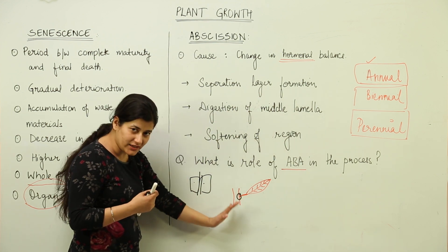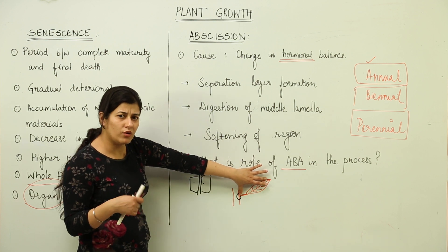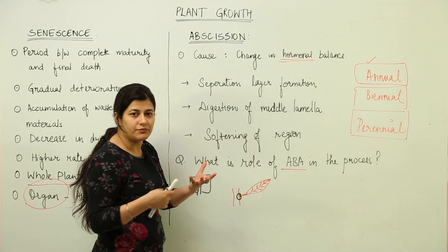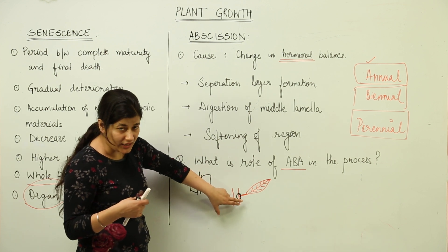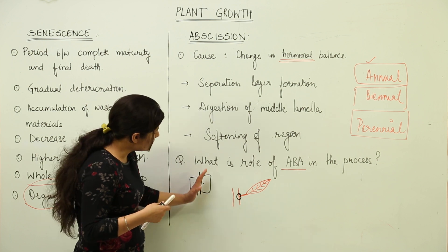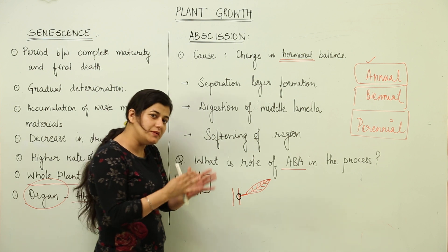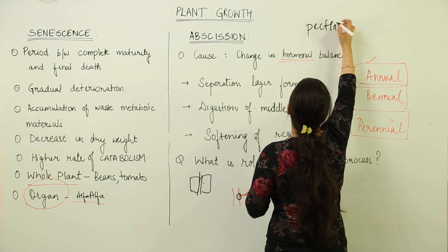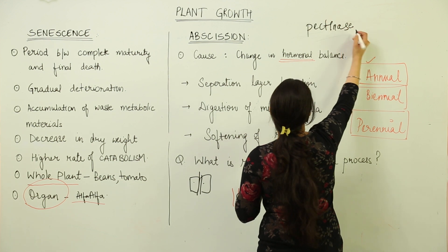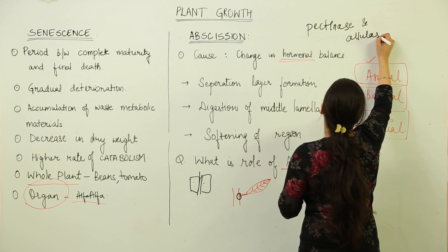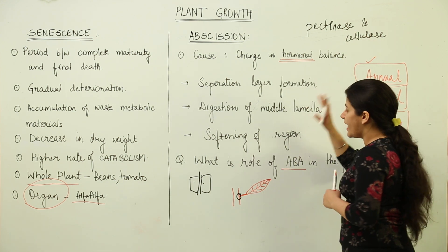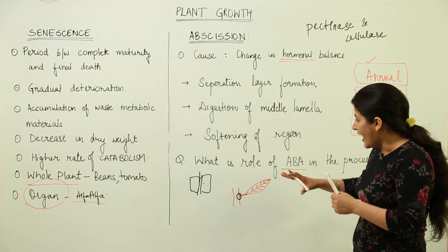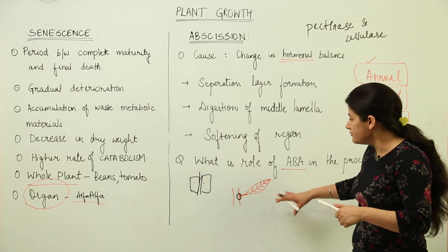This leaf or particular organ — it could be a fruit as well — falls down. Ripened fruits fall because the stalk is not able to bear the weight since it has been separated by the abscission layer. The middle lamella layer, which was responsible for cementing the cells, has been digested by hydrolyzing enzymes, which are often pectinase and cellulase. Pectinase and cellulase digest the polysaccharides present in the middle lamella, leading to softening of the region. When rain or strong wind comes, they fall down.